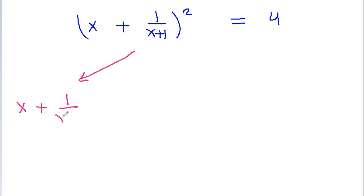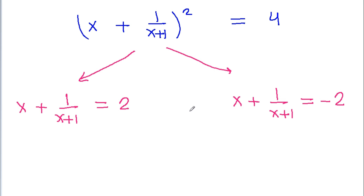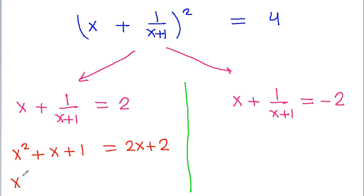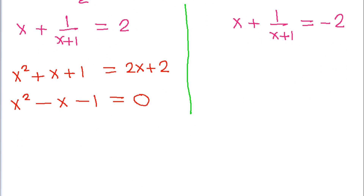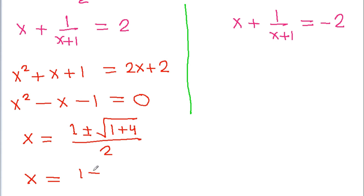So x plus 1 by x plus 1 whole squared is equal to 4, giving x plus 1 by x plus 1 is equal to 2 or x plus 1 by x plus 1 is equal to minus 2. From the first case we get x squared minus x minus 1 is equal to 0, and using the quadratic formula x is equal to 1 plus or minus root 5 by 2.